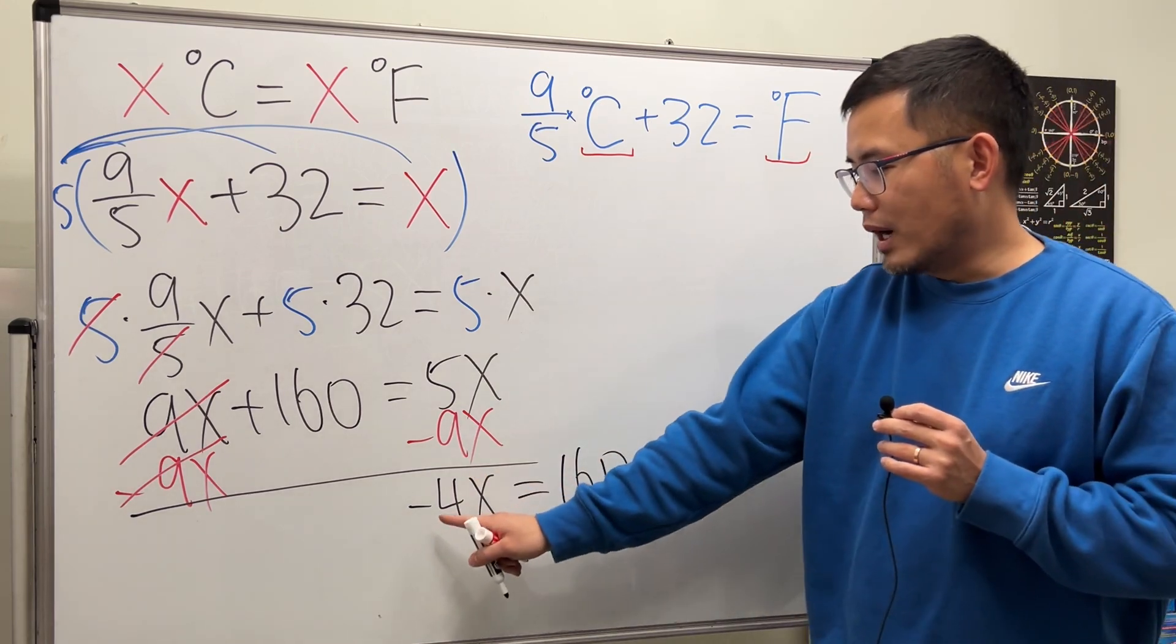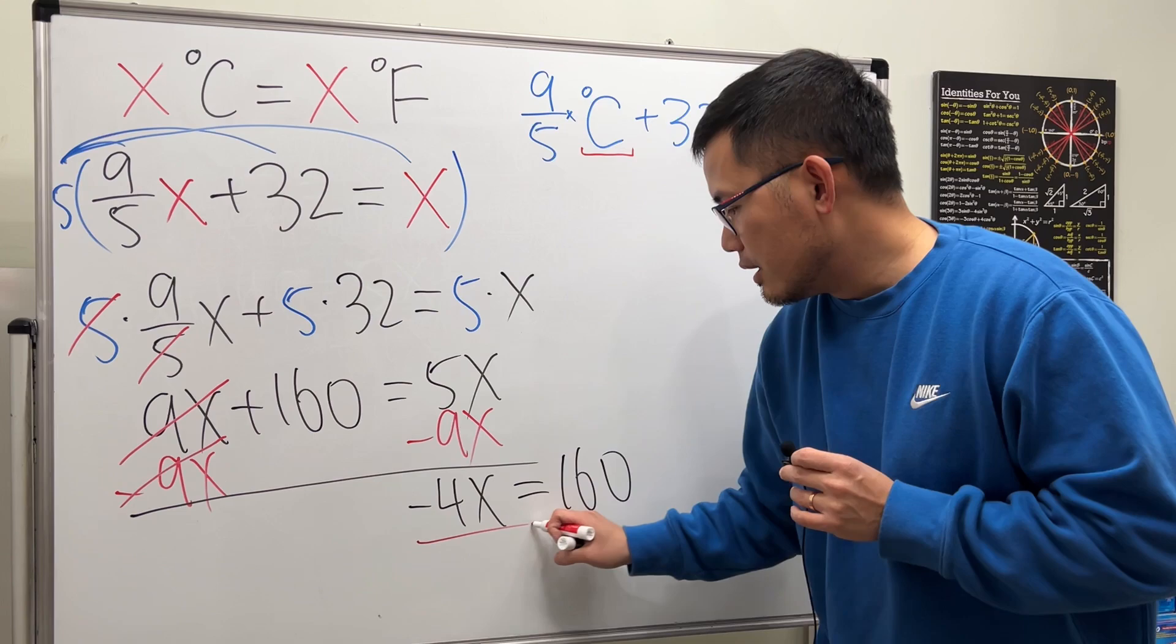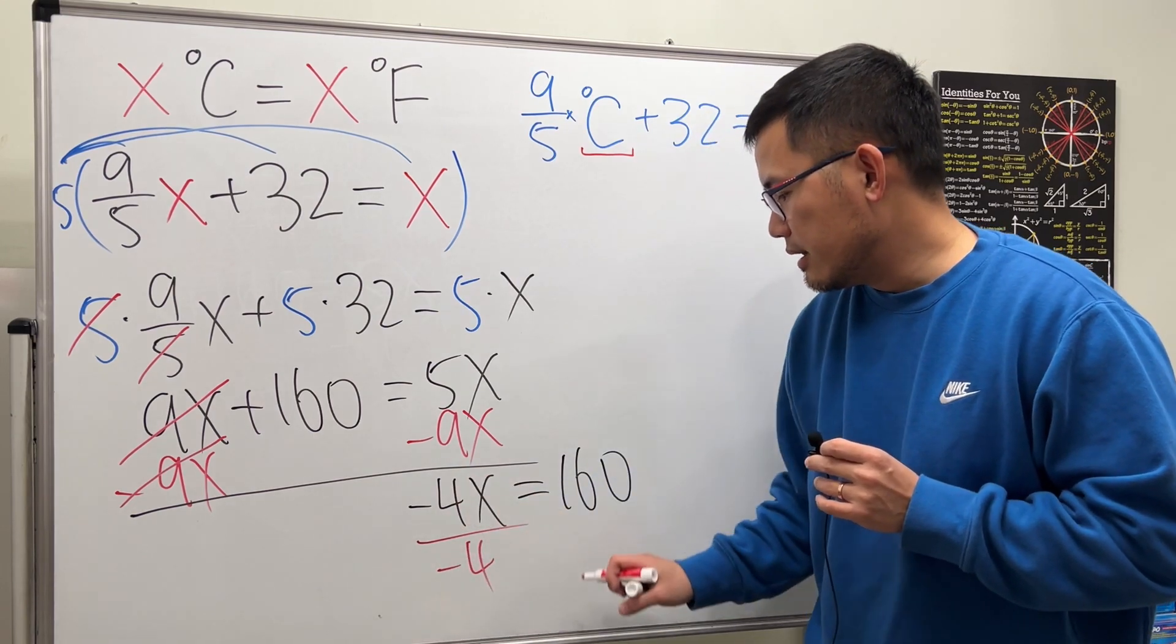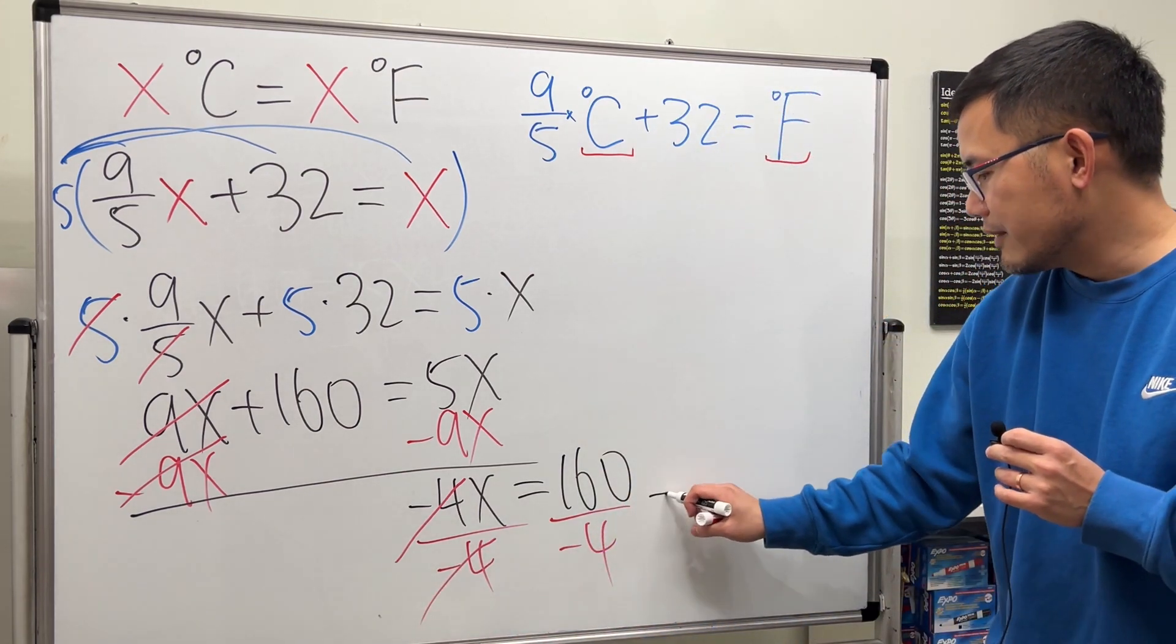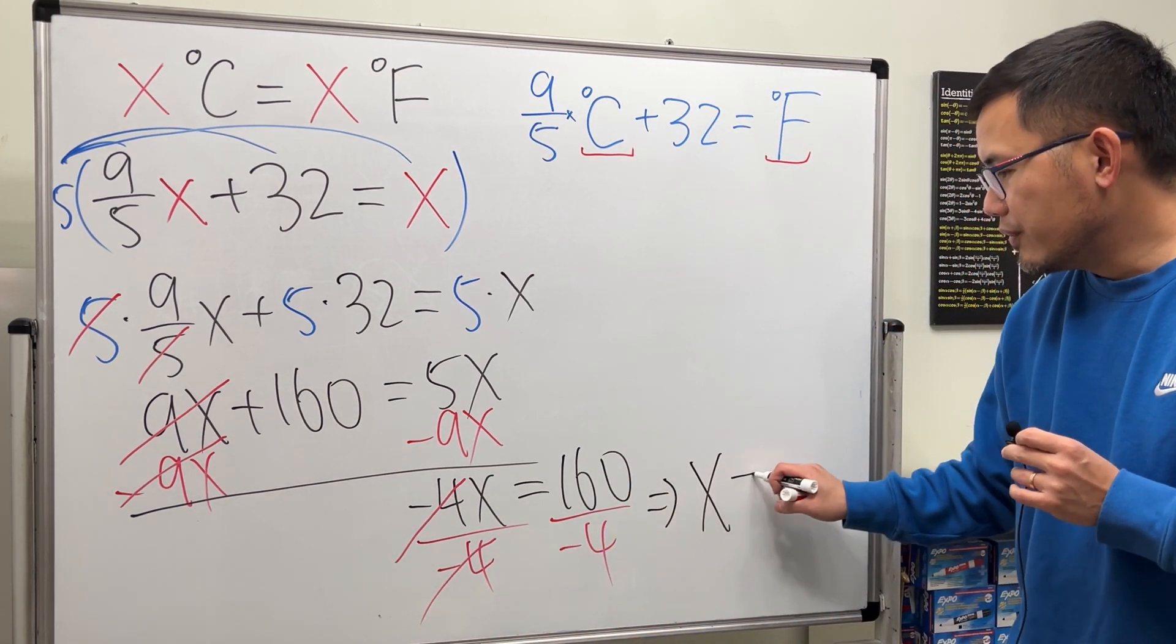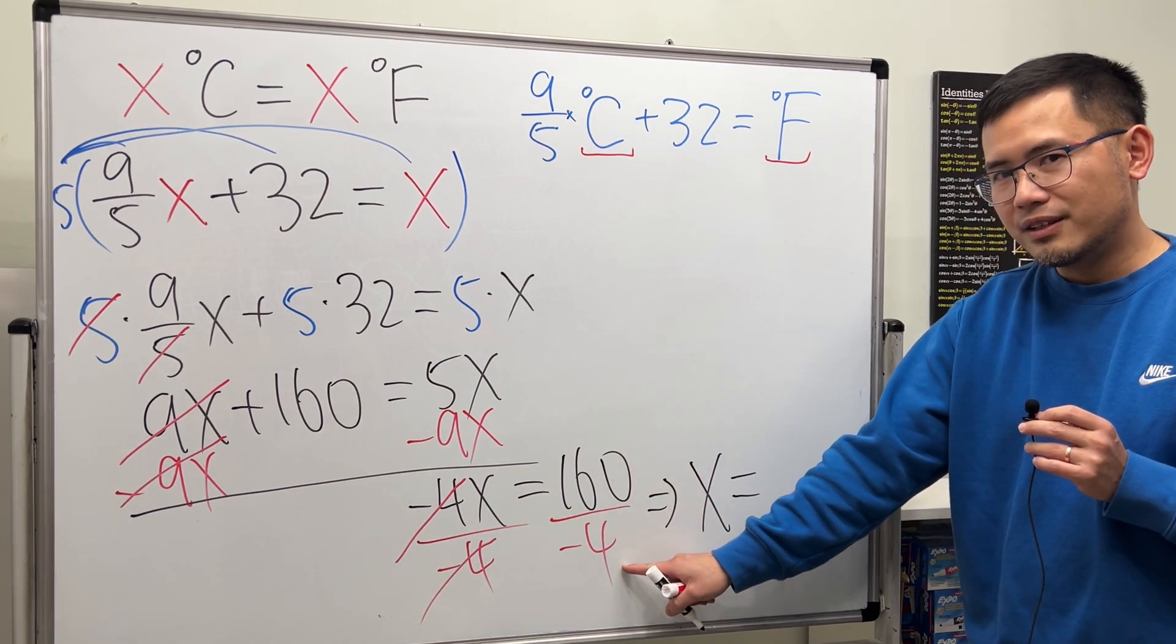Now this is negative 4 times x. To get the x by itself, go ahead, divide both sides by negative 4. Cancel, cancel. And we will have x by itself.